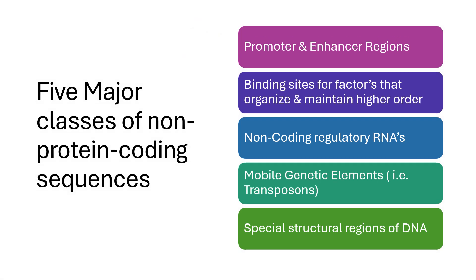The first section we will be talking about covers the five major classes of non-protein coding sequences. They are: promoter and enhancer regions; binding sites for factors that organize and maintain higher order; non-coding regulatory RNAs; mobile genetic elements, for example transposons, otherwise known as jumping genes; and special structural regions of DNA.